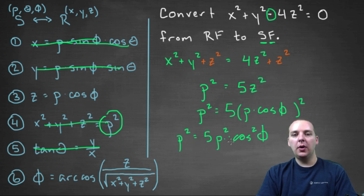But now we have a ρ² on both sides, and so as long as ρ is not zero, we can cancel these two guys, divide them from both sides, and we'll have 1 = 5 cos² φ.